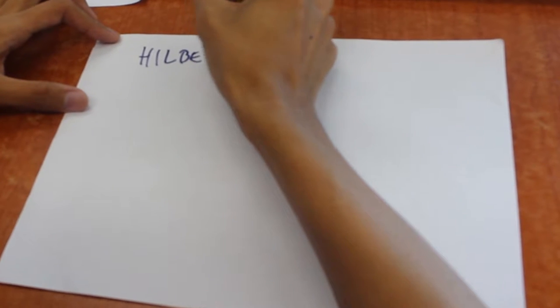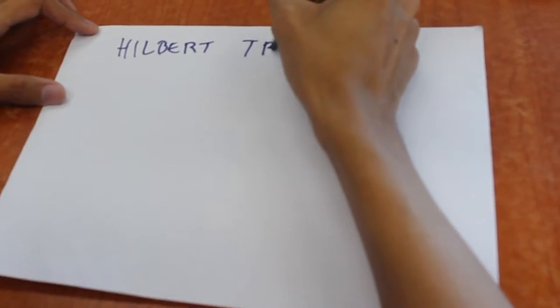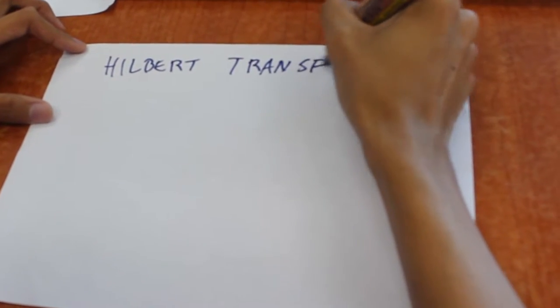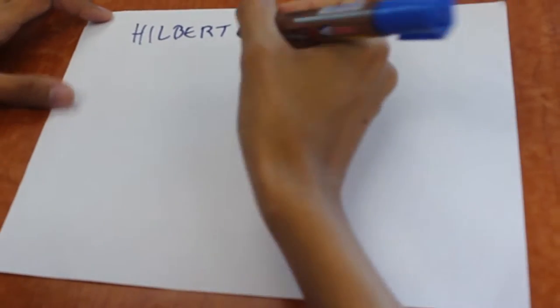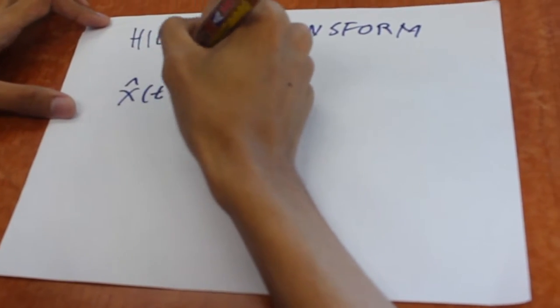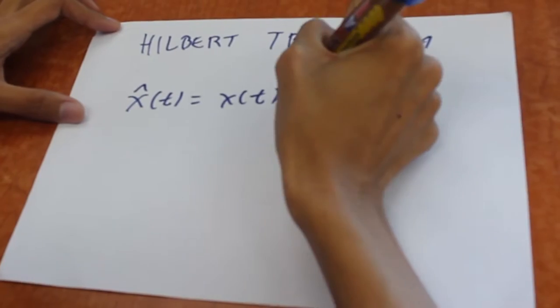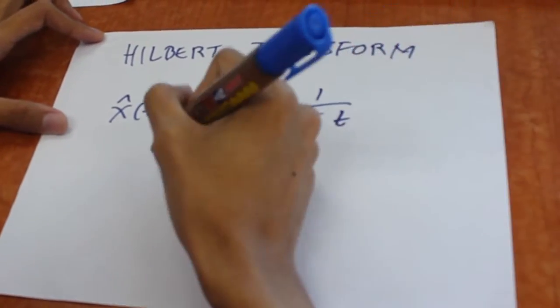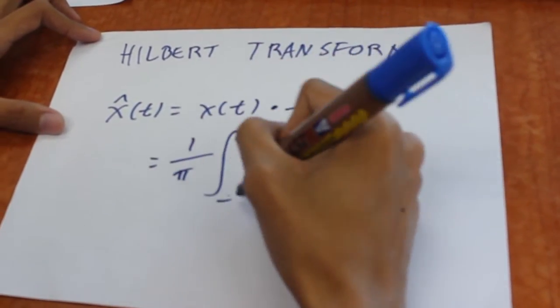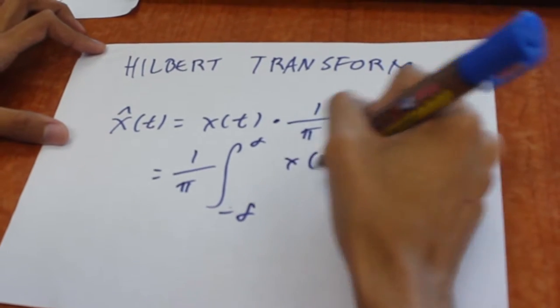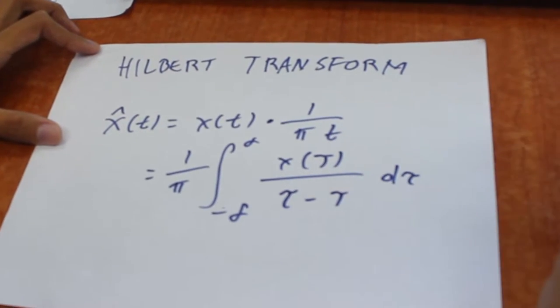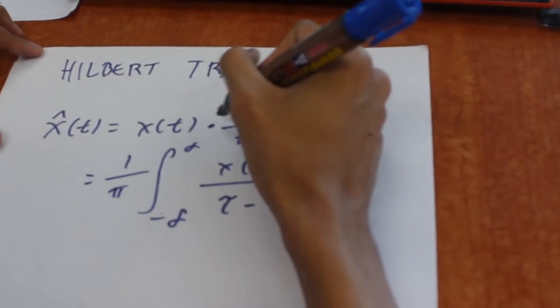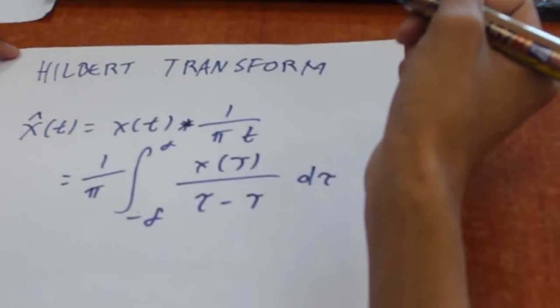The software envelope detector may be developed by the use of the Hilbert Transform. Hilbert Transforms are extensively used in the analysis and signal processing in passband communication systems. The Hilbert Transform of x(t) is denoted by x hat of t. The Hilbert Transform is defined by the following integral, where the asterisk represents convolution.